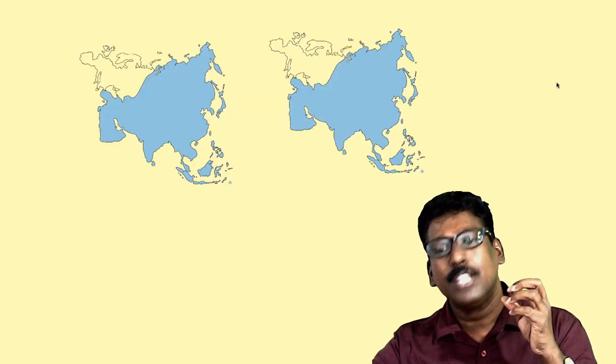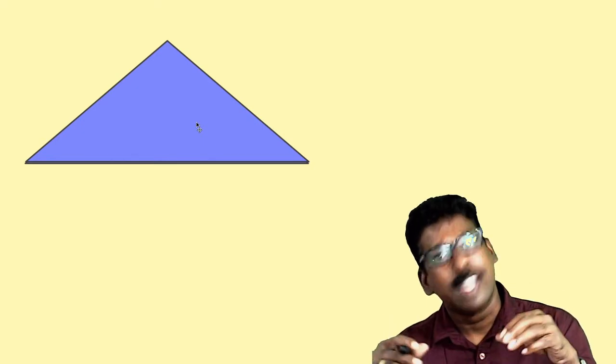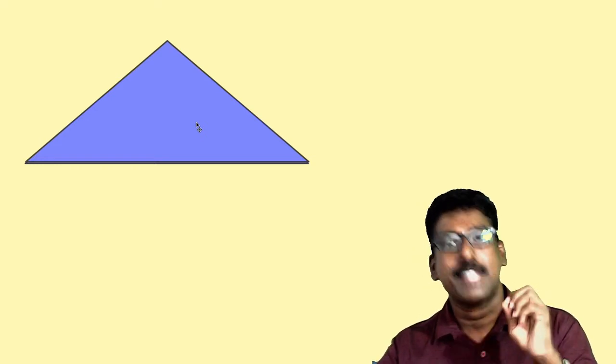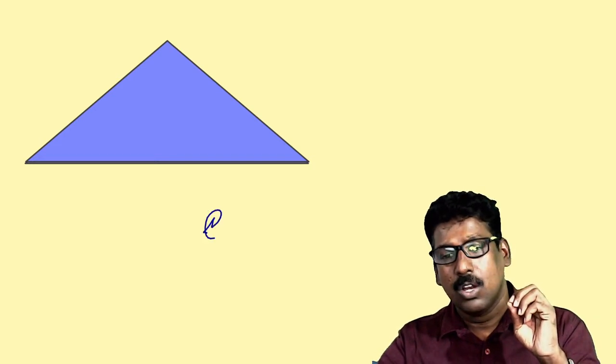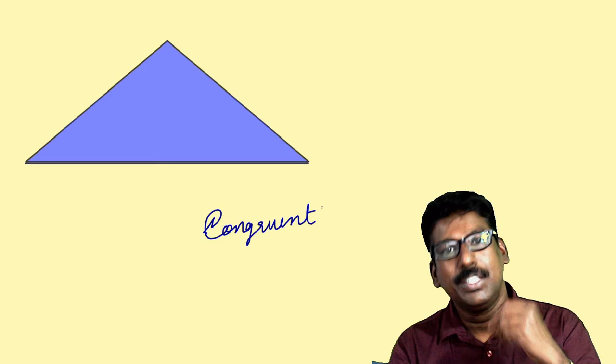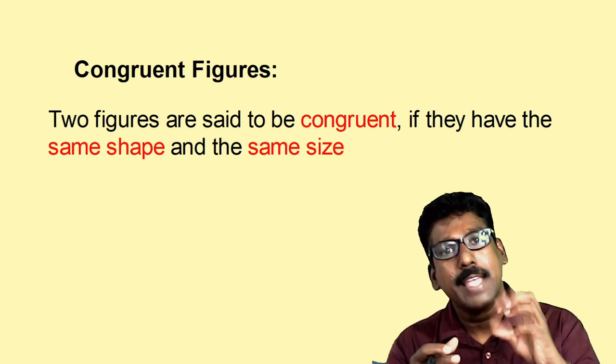Now what about the other? If you keep one triangle upon the other, they coincide exactly. All the sides coincide exactly — that means these two figures have the same shape and same size. This type of figures we call congruent figures. This you have learnt in the lower classes. We can define congruent figures as: two figures are said to be congruent if they have the same shape and the same size.